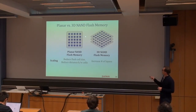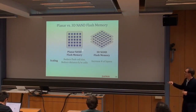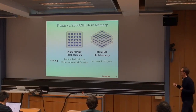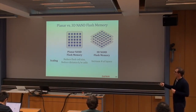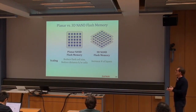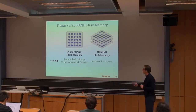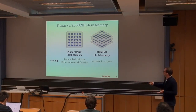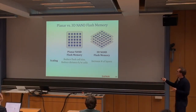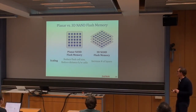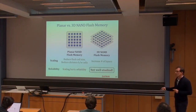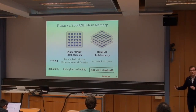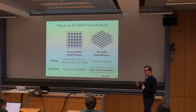Let's talk about planar versus 3D NAND flash memory. For a long time, planar (two-dimensional) memory was very successful, but it was hitting scaling limits — just as DRAM may be hitting scaling limits now. In planar flash, people scaled by reducing cell size and distance between cells to get high capacity. Scaling hurt reliability significantly, and many methods were developed to make it work. Three-dimensional NAND flash memory stacks cells, increasing the number of layers to boost capacity.